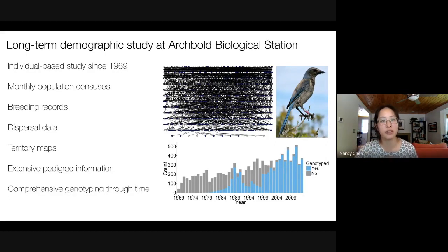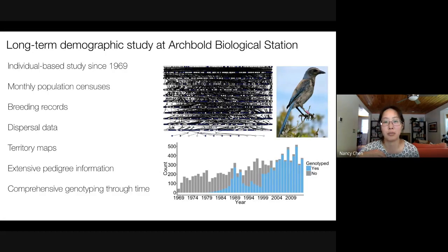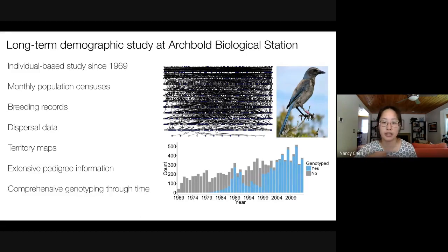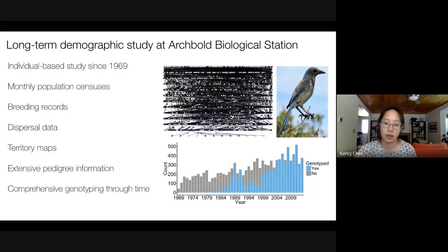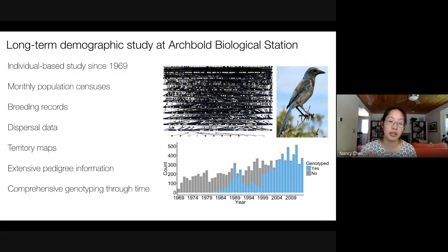Over the past 50 years, we've collected extensive pedigree information — a multi-generational pedigree with about 10,000 individuals. For about 4,000 of these individuals, we have collected genomic data; we designed a custom Illumina B-chip to genotype about 4,000 individuals at 12,000 SNPs across the genome. We've genotyped nearly every individual in our population for the past decade plus, allowing us to look at allele frequency dynamics over time.